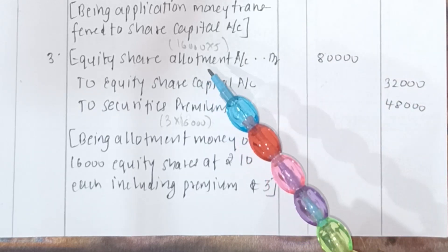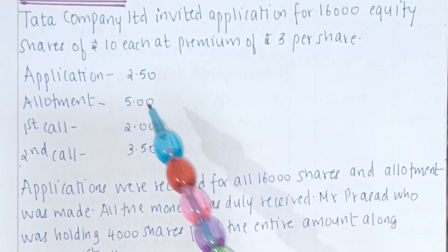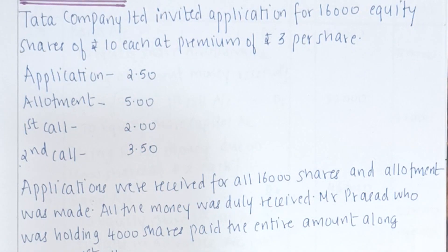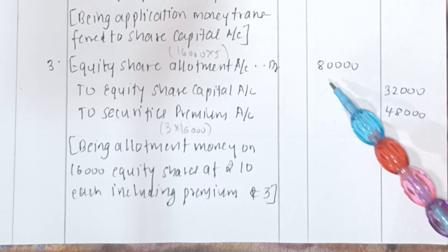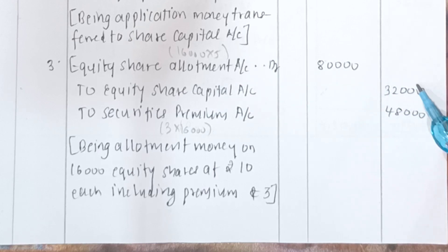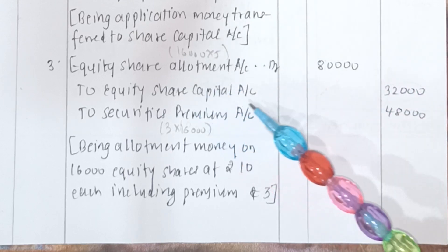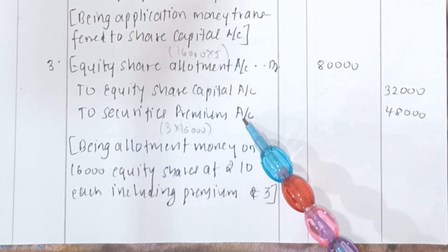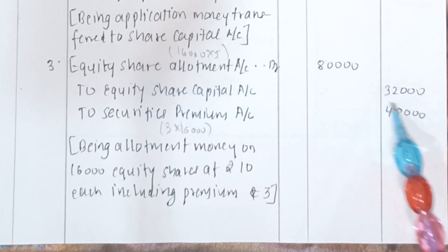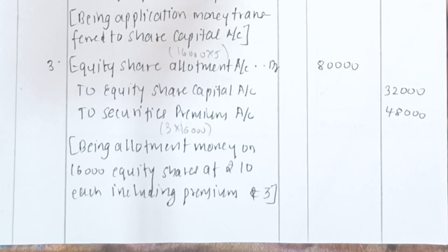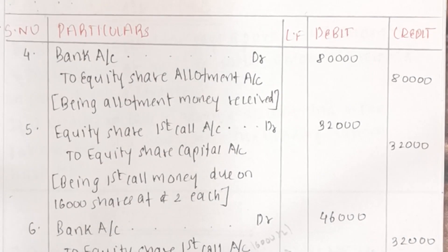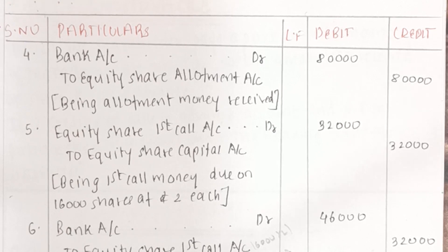Now moving on to the third entry. As we can see there is a premium of Rs 3. We will record this as: Equity Share Allotment Account debit to Equity Share Capital Account and to Security Premium Account. Security premium is Rs 3 into 16,000 = Rs 48,000. The total allotment is Rs 5 per share into 16,000 = Rs 80,000. Subtract: 80,000 minus 48,000 gives the equity share capital amount. Always solve premium first, then total allotment, subtract to get equity share capital. The narration is being allotment money on 16,000 equity shares at Rs 10 each including premium at Rs 3. Fourth entry: Bank Account debit to Equity Share Allotment — Rs 80,000.